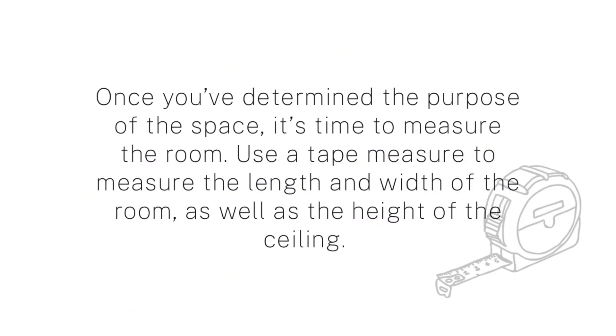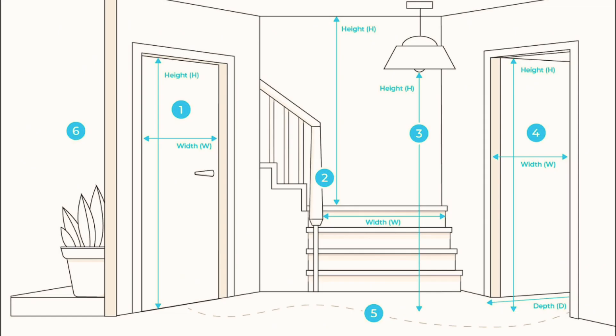The second tip is to measure the space. Once you determine the purpose, it's time to measure the room. Use a tape measure to measure the length and width of the room, as well as the height of the ceiling. This gives you an accurate idea of how much space you have to work with. Sometimes we think we know the dimensions, but when you choose the furniture everything goes wrong. So it's really important to have the proper measurements and create a floor plan.